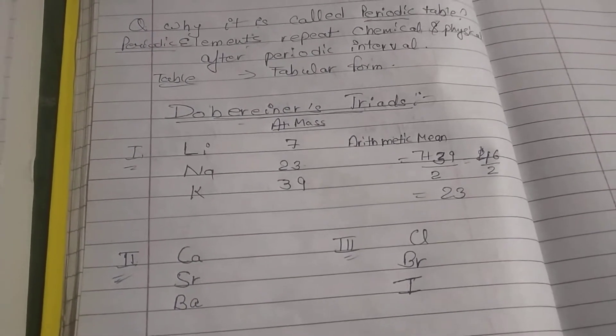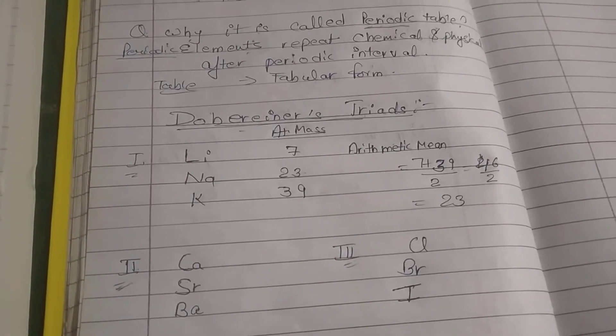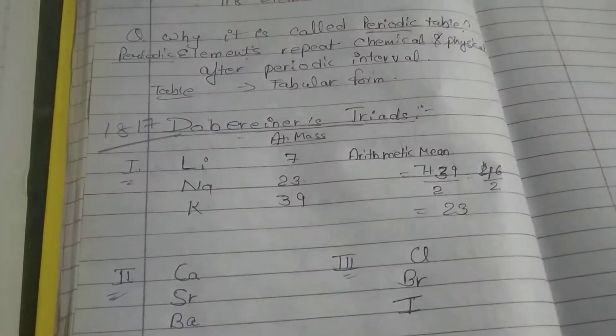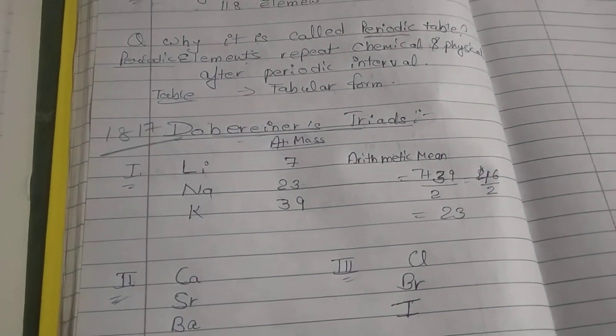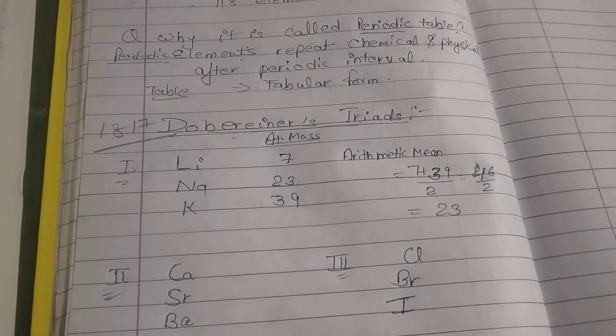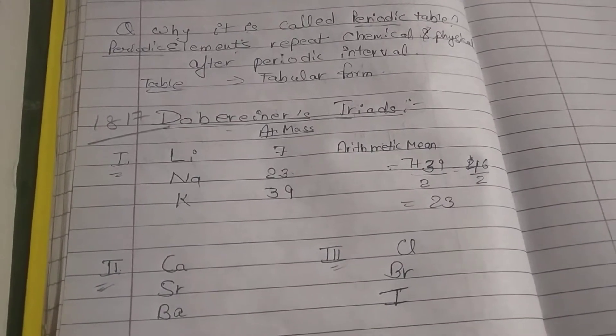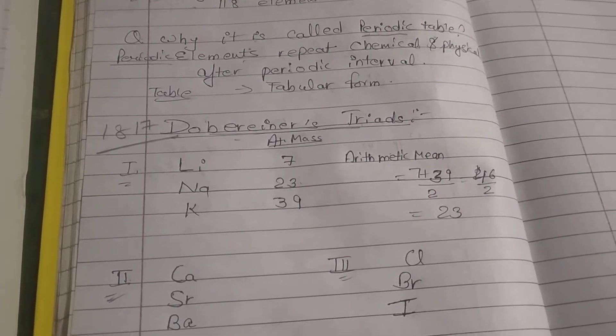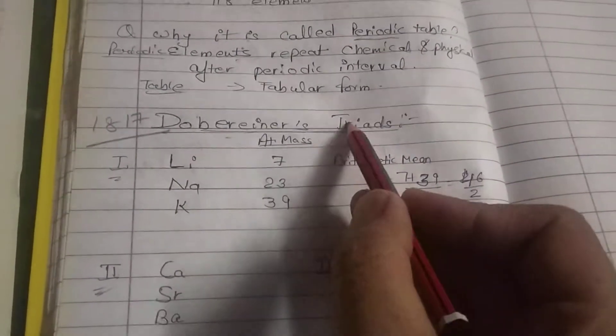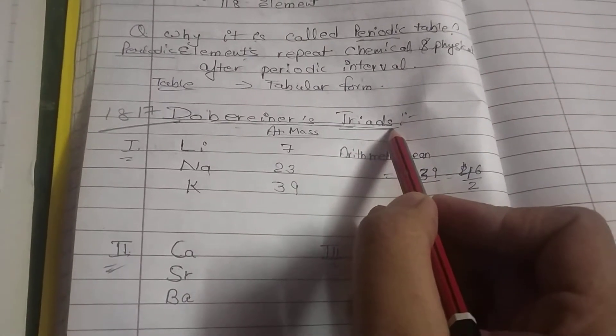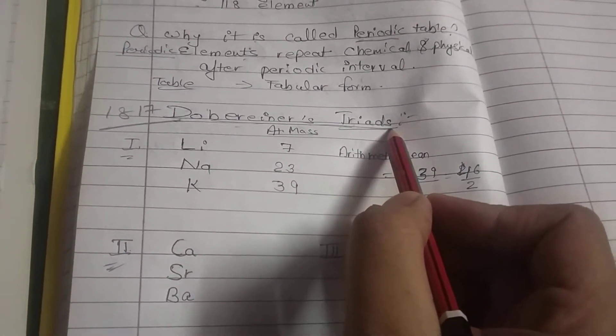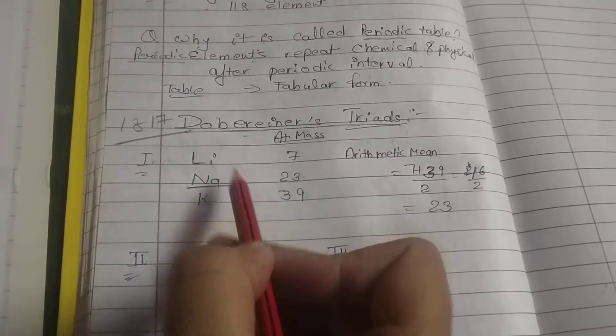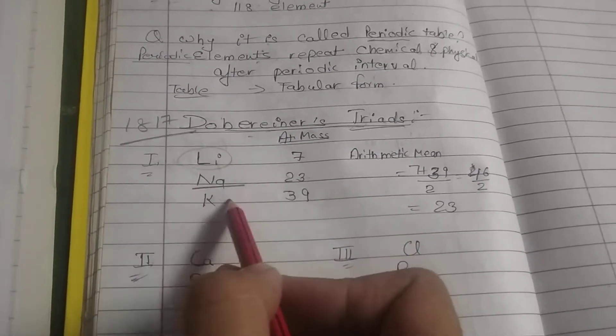According to this scientist, in 1817, according to his law, when we arranged the elements in increasing order of their atomic mass, then we found the group of three elements known as triads, which have same chemical properties and the atomic mass of the middle element is equal to the arithmetic mean of the other two elements.